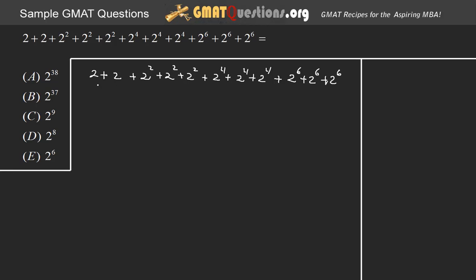What we need to do here, the 2 plus 2, we know is 4, right? But instead of writing 4, we're going to write 2 squared. Because 4 is 2 squared.